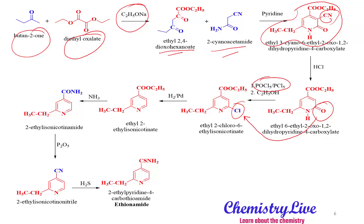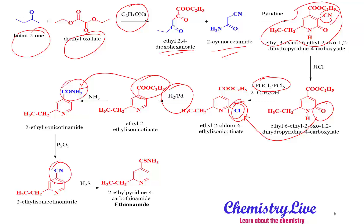Next, the compound is reacted with POCl₃ followed by C₂H₅OH (ethanol), converting the C=O group into a Cl group — using POCl₃ or PCl₅ converts C=O to Cl. Reduction of the Cl using H₂/Pd (palladium catalyst) removes the Cl from the pyridine ring. Liquid ammonia is then added, converting the isonicotinate group into nicotinamide. The nicotinamide is further hydrolyzed to form a cyano derivative, which is finally passed through H₂S to yield the CSNH₂ — ethionamide.